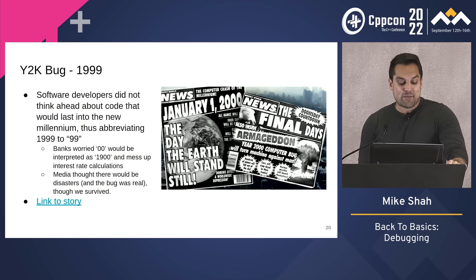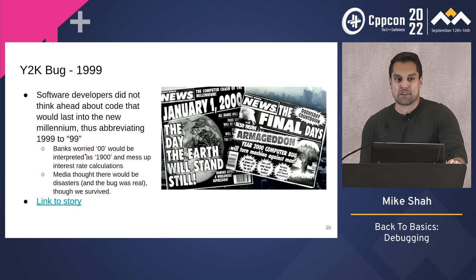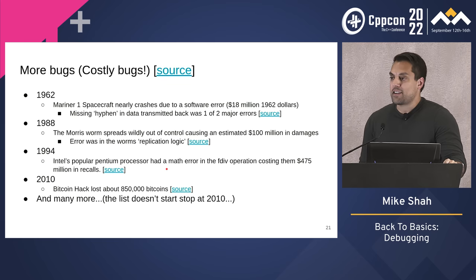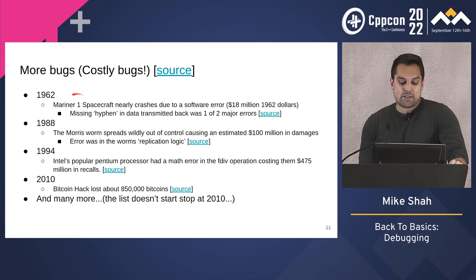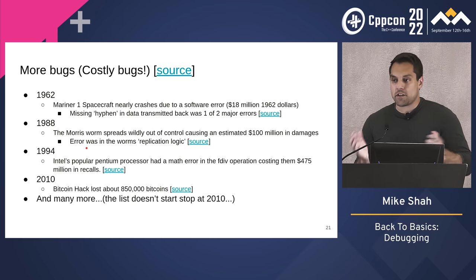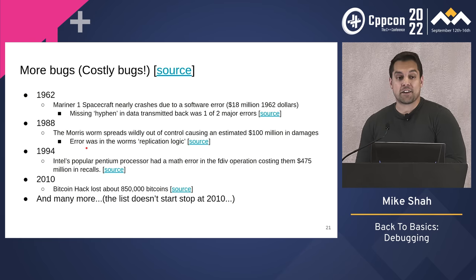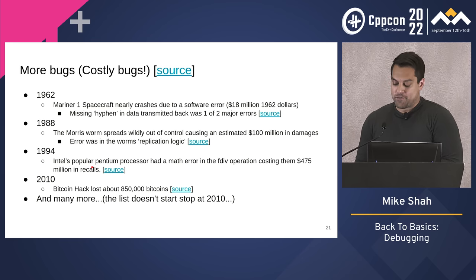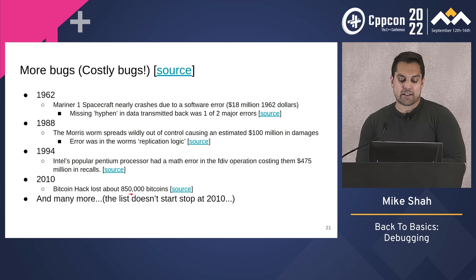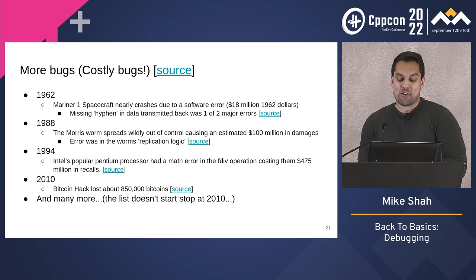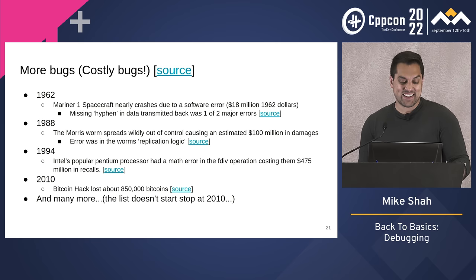The Y2K bug — using two digits instead of the full year, where banks were worried this was going to melt down our financial system. Many more costly bugs: space missions, viruses, security flaws, Intel's floating point math processing error, a Bitcoin hack where they lost 850,000 Bitcoins. And many more — this list goes on right up to minutes ago when I was doing some coding myself.